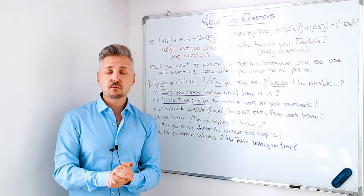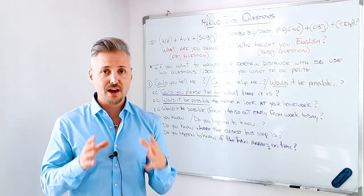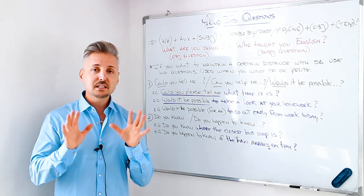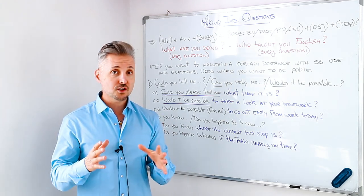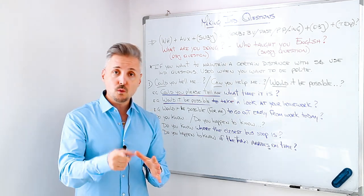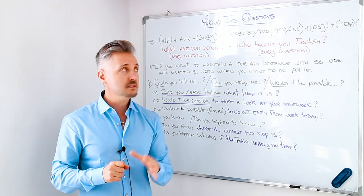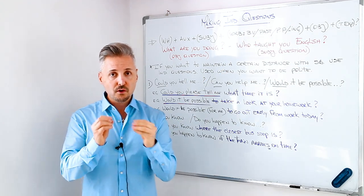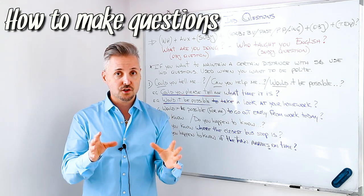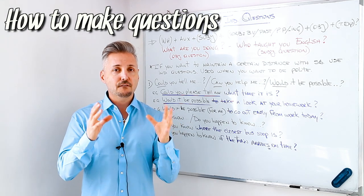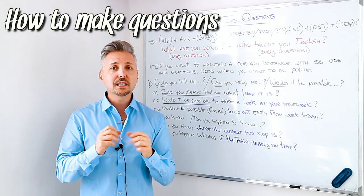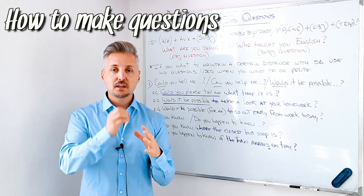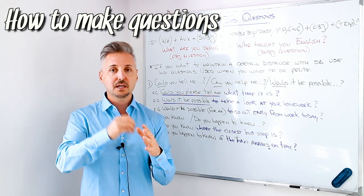Yes, that's right. We're going to talk about making indirect questions. However, I spoke about making questions before. I will review more or less how to make a normal question. What do we need first? We need the auxiliary. The auxiliary is essential in a question — the auxiliary plus the subject.